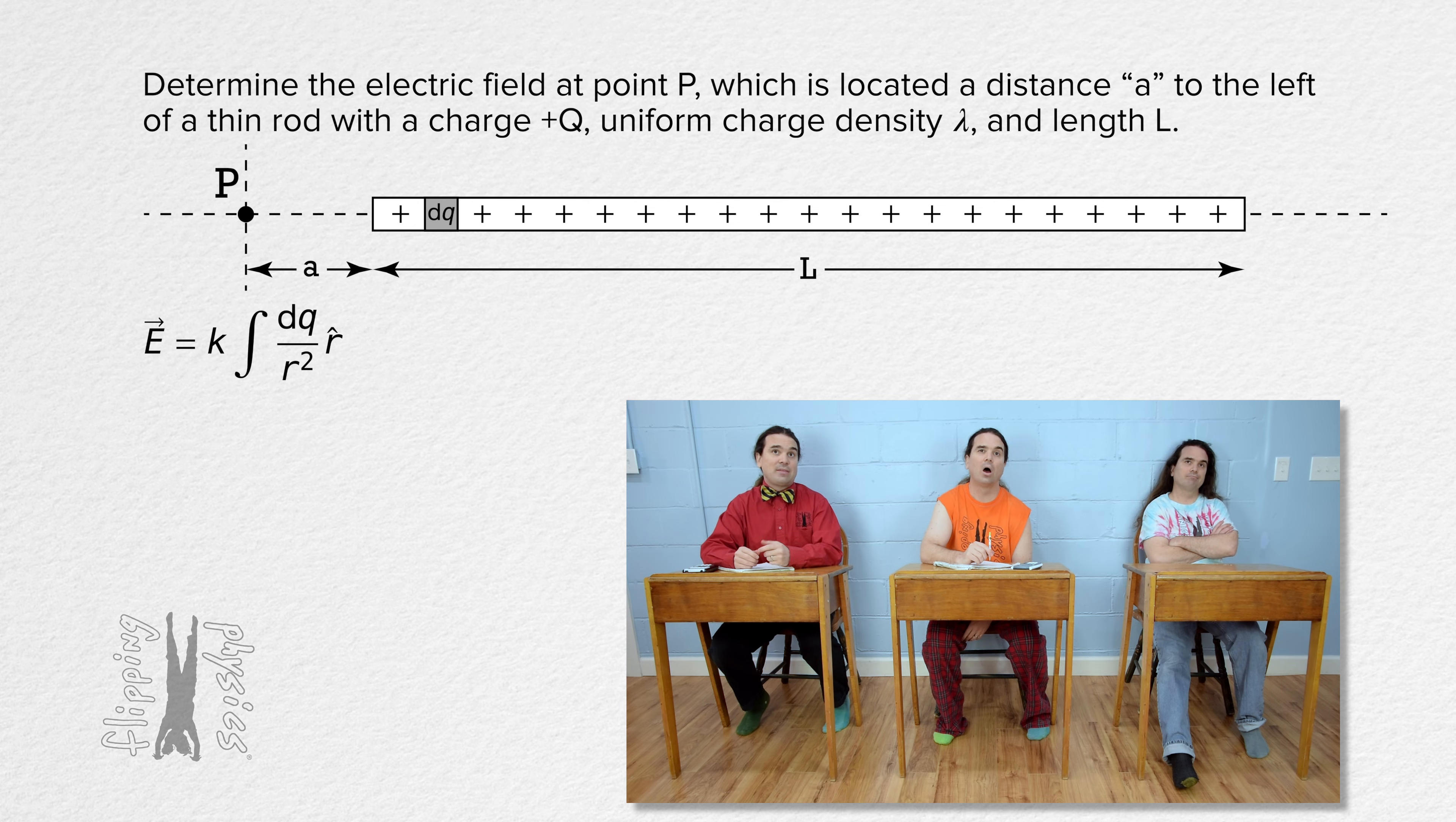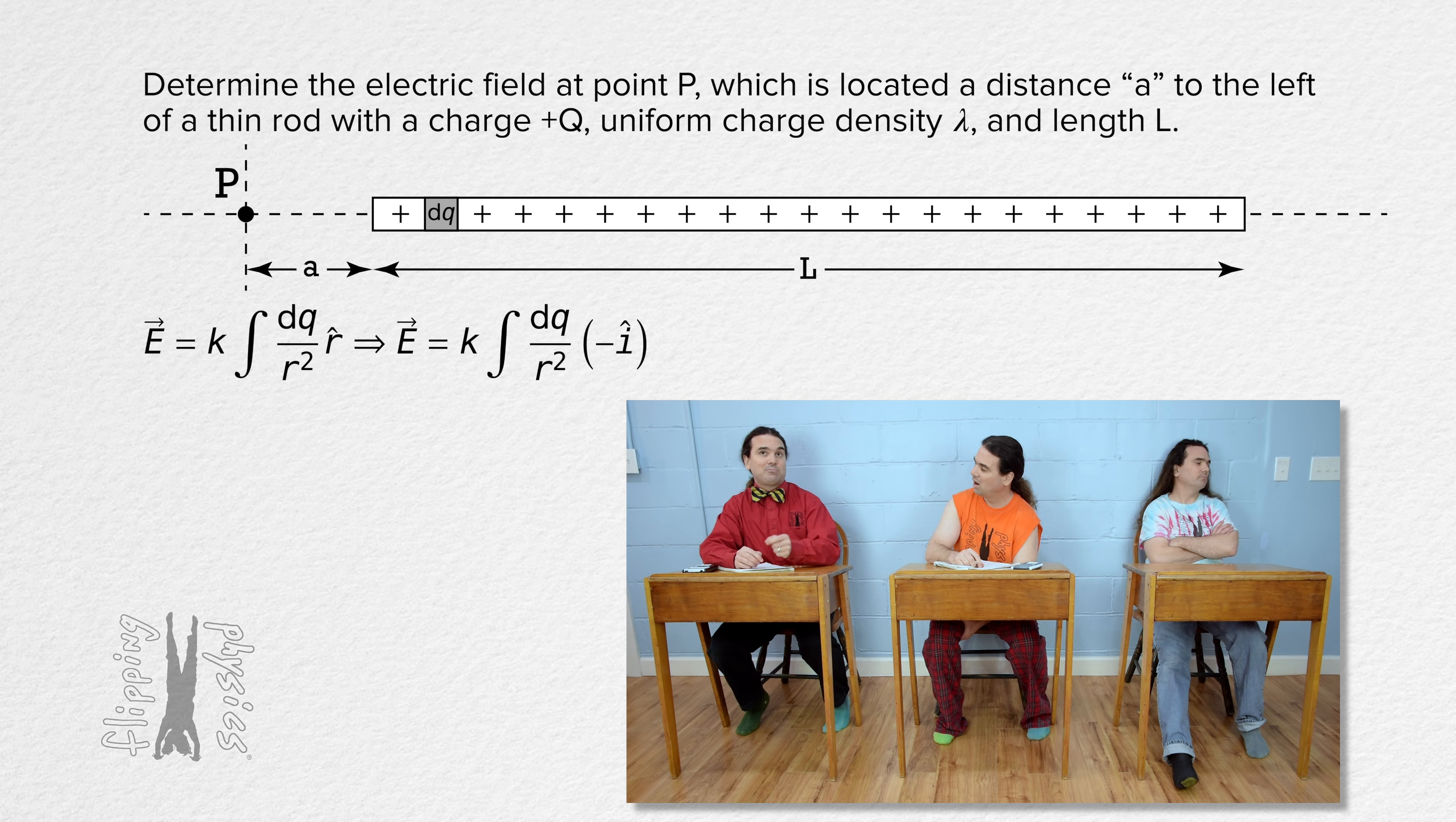In this case, rather than unit vector r, let's replace that with the negative of unit vector i because we already determined that a small positive test charge would experience an electrostatic force to the left at point P. Also, rather than r squared in the denominator, let's put x squared in the denominator because dq is located to the right of point P at a variable distance in the x direction, or x.